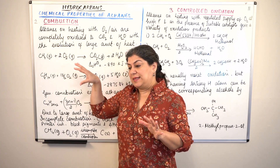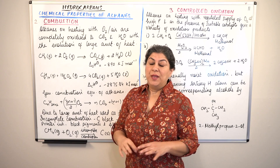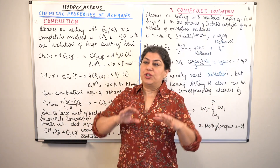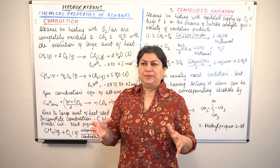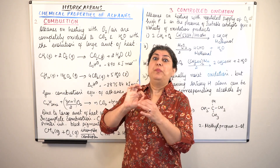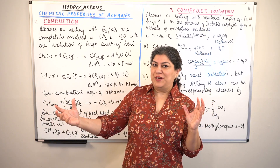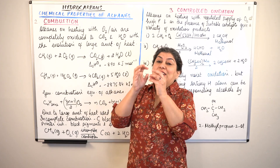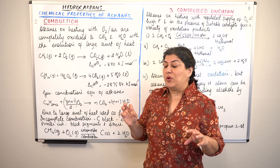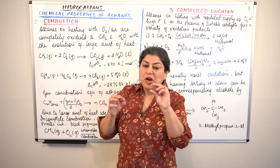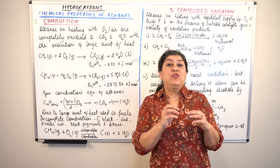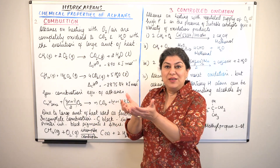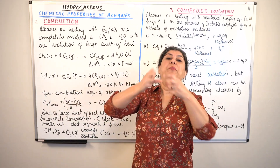Let us start with combustion. Alkanes are saturated hydrocarbons — the octets of every carbon and the duplets of hydrogen are satisfied, so they do not need to react. Yet if you burn something in the presence of a lot of oxygen, there is a lot of energy. That ignition causes bonds to break, and since alkanes consist of carbon and hydrogen, the carbon part combines with oxygen to form carbon dioxide and the hydrogen forms water. So alkanes can very easily burn if given the right ignition temperature.